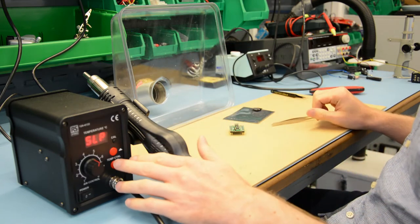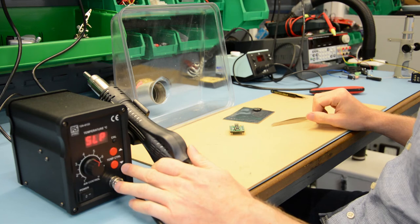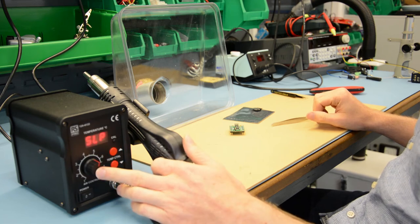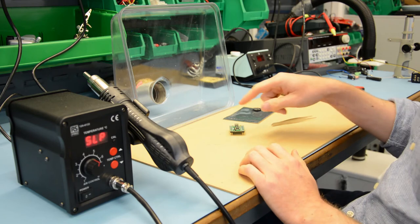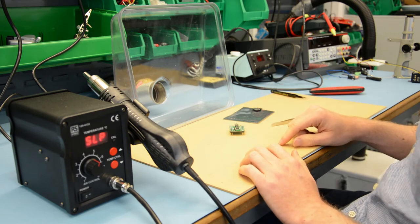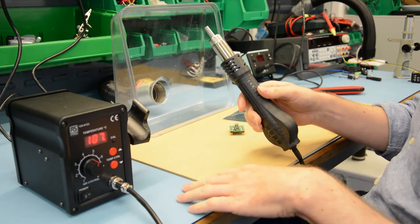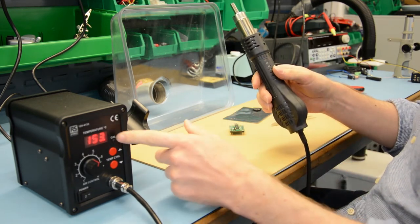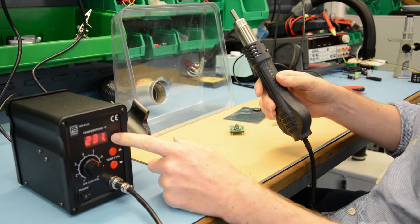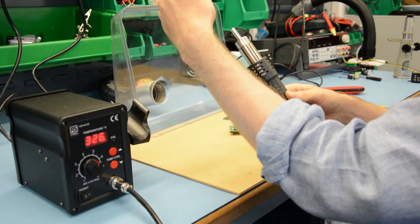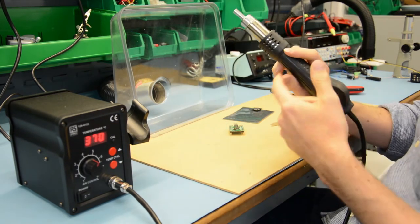I've already preset the station to 365 degrees and set the air to a medium setting so we don't blow the little bits off the board. So as we pick the hot air gun up, the temperature automatically starts and we'll get up to a reflow temperature and wait for the gun to warm up.